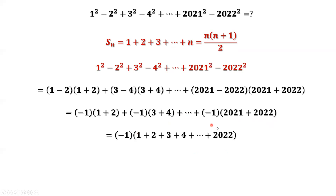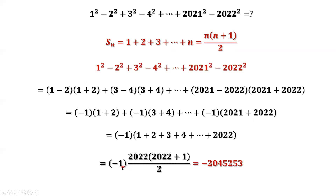Now it is time to use the summation formula. In our case, n is 2022. Replacing n by 2022, we get: negative 1 times 2022 times (2022 plus 1) divided by 2. Simplifying this gives us negative 2,045,253 as the answer.